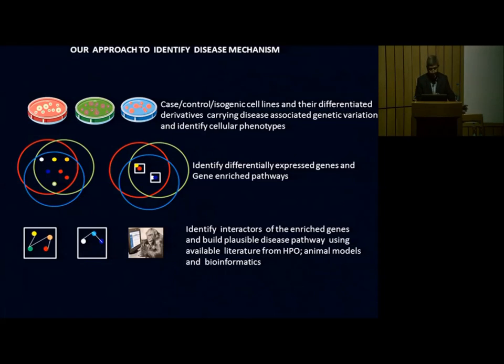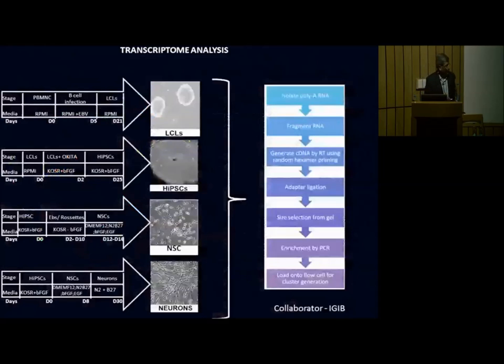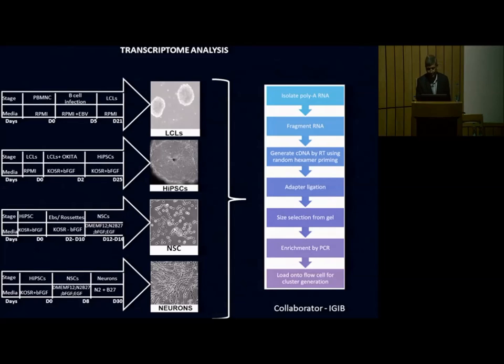This would help us identify differentially expressed genes and gene-enriched pathways, which would help us understand what these processes are, and this would then help us identify interactors of these genes and build plausible complete disease pathways using whatever available literature and lots of postdocs and students. So this is a kind of workflow. We start with the LCL, we have the pluripotent stem lines, we have neural stem cells, and then we have the full neurons, and we follow this whole process by isolating the RNA, fragment the RNA, and basically look for the transcriptome analysis.